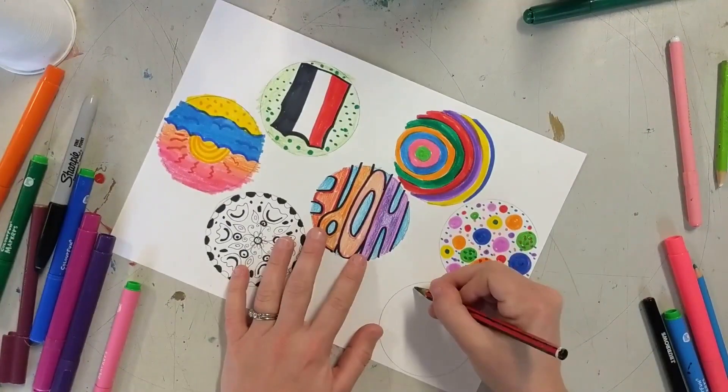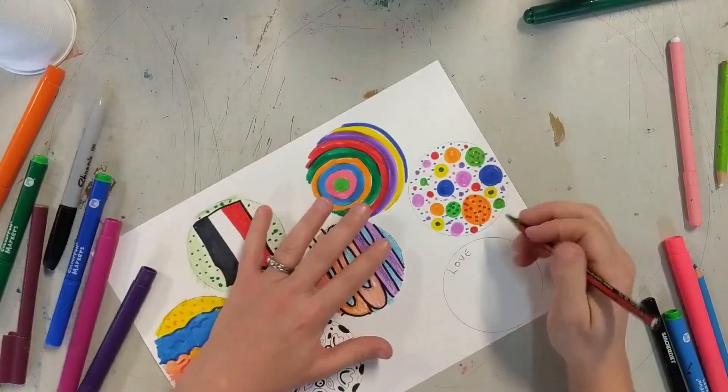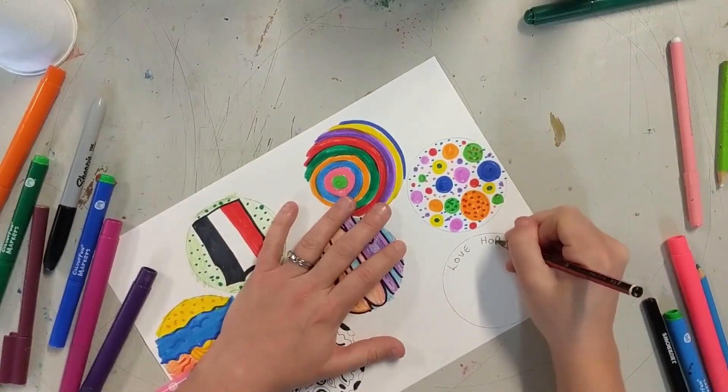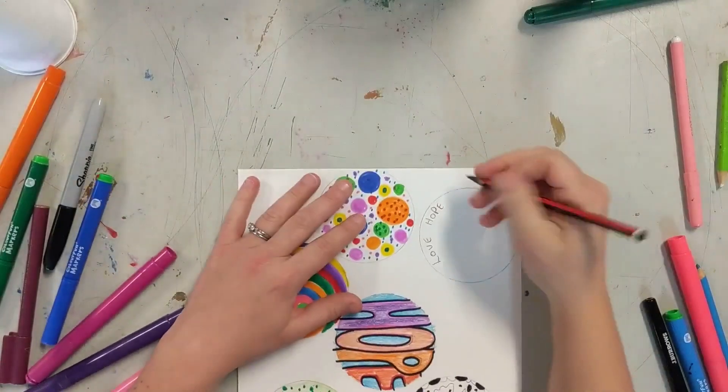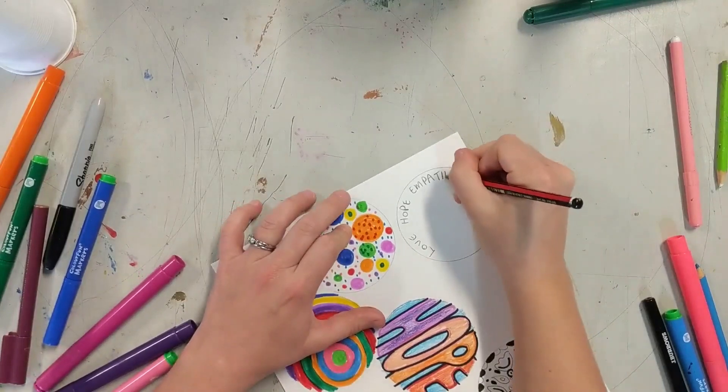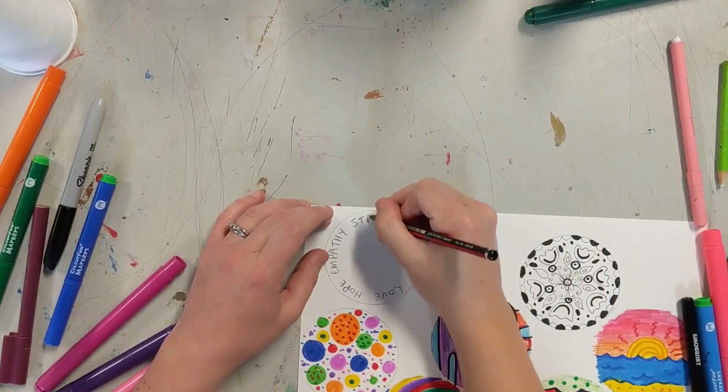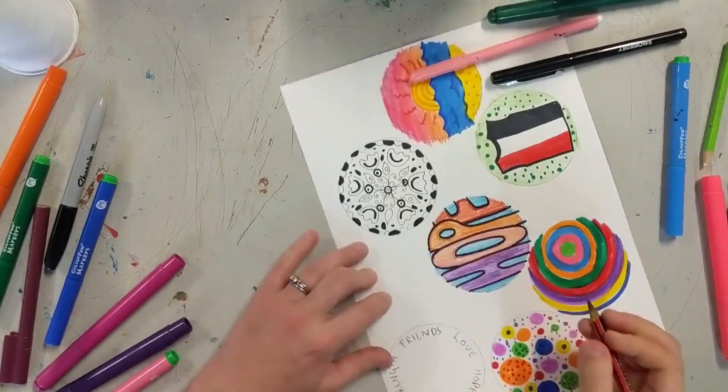And the last one I am using a combination of drawing with words. So I am just choosing some words that mean something to me. So I've got love, hope, empathy, which we all know about this one at our school. And what else am I going to put? We've got strength and friends.